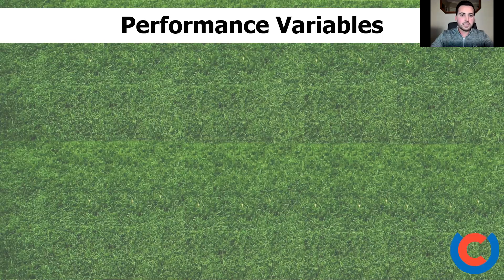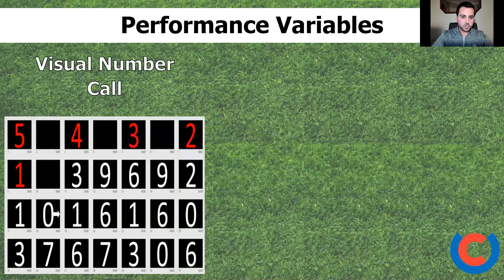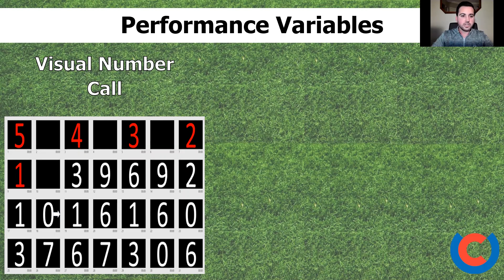Throughout the testing session and training intervention, we had three performance variables. The visual number call task always started with a five-second countdown; numbers appeared in red to indicate off, and then large white numbers appeared on screen every half a second — participants had to call every number that appeared. Every three, four, or five seconds there would be an arrow displayed left or right, indicating direction of pass. The main reason we used the visual number call was to gauge how much visual attention players could direct towards the screen while controlling and passing a football.